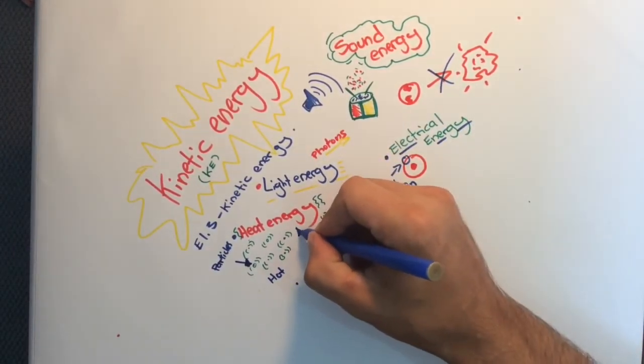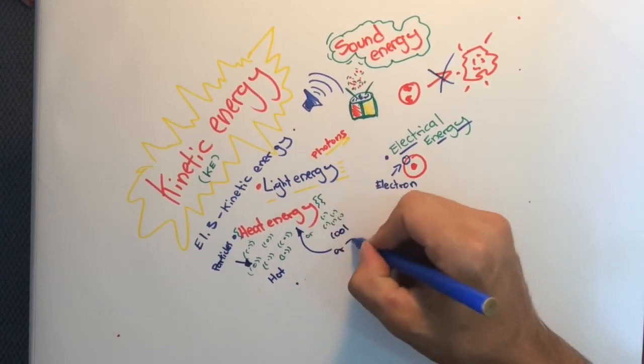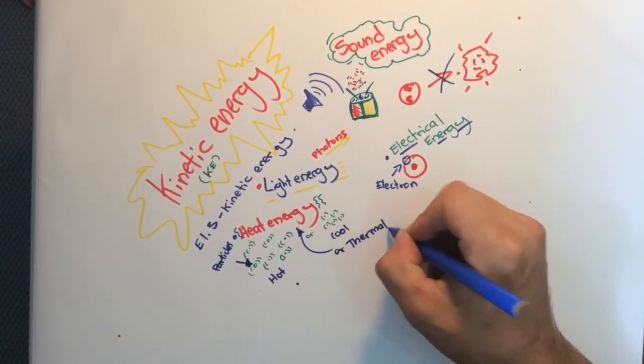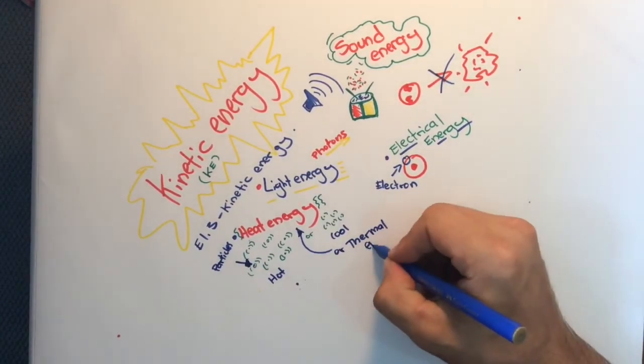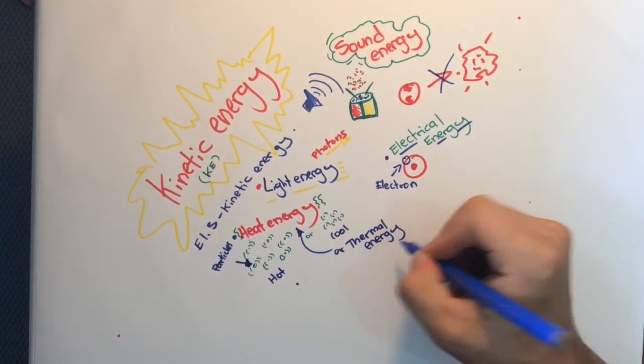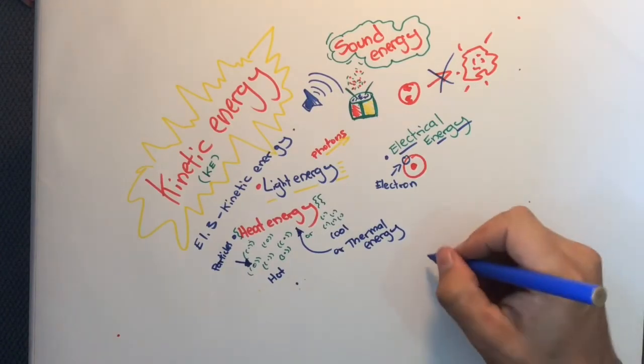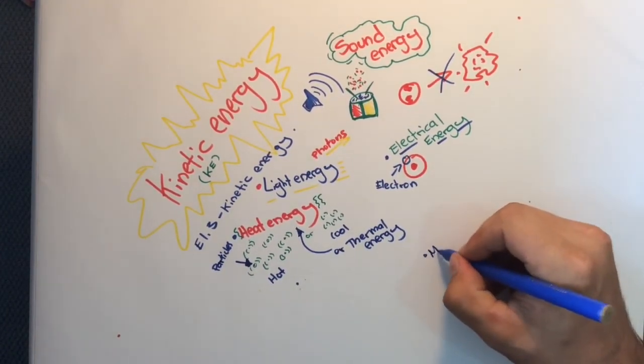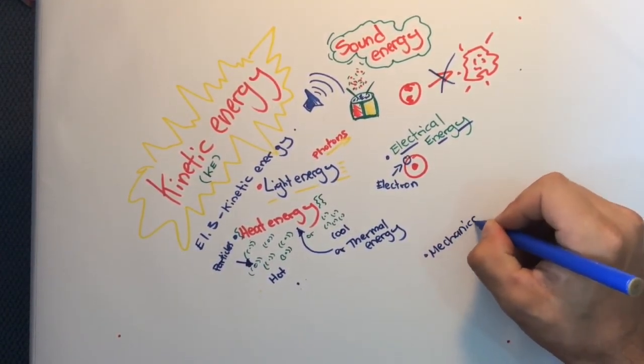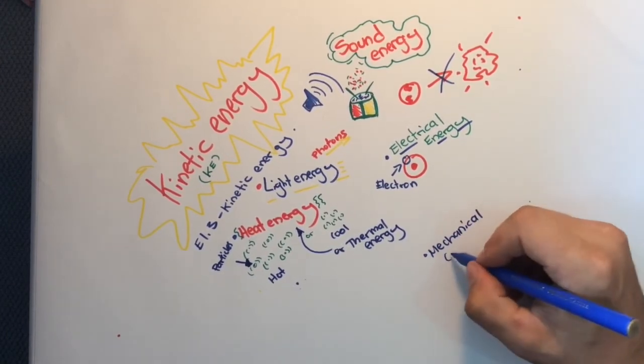Another form of kinetic energy which we won't discuss here is mechanical or motion energy. Let's sum up what we learned. Kinetic energy is the energy of motion. Types of kinetic energy are light, sound, heat, and mechanical. Okay, that's a wrap. Stay tuned.